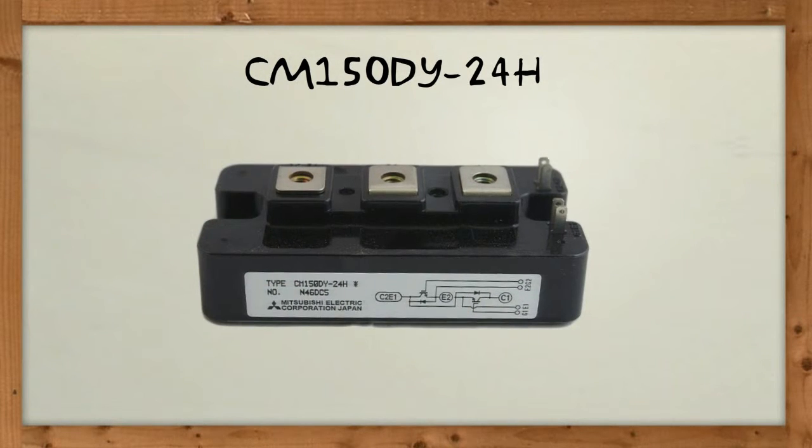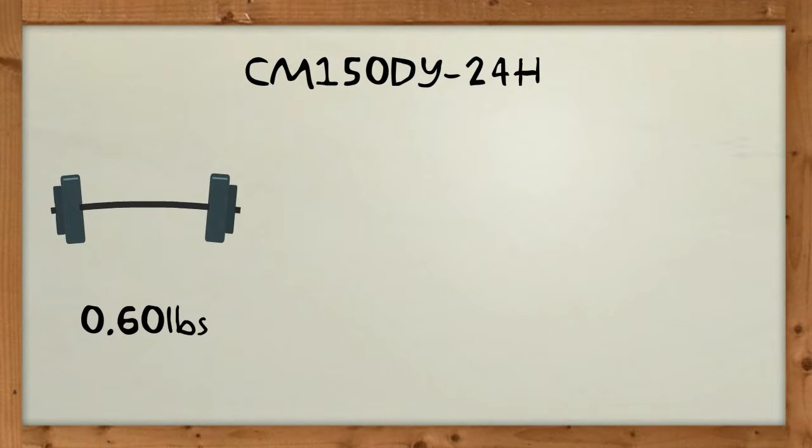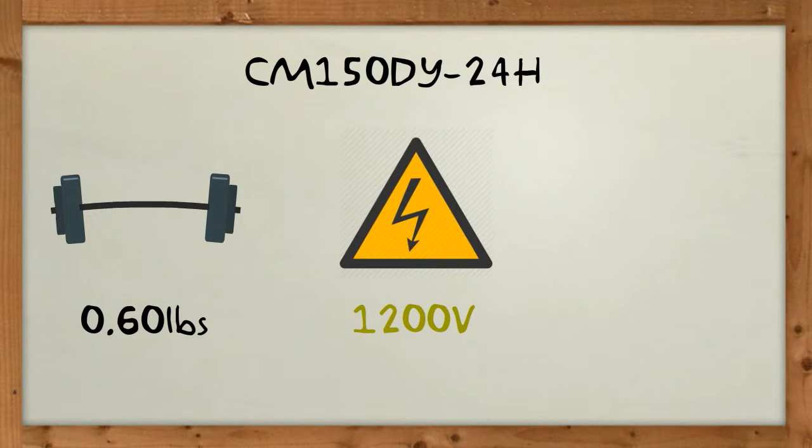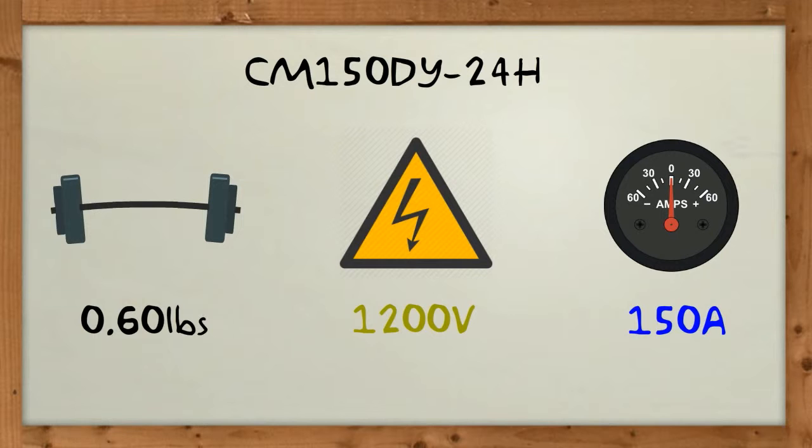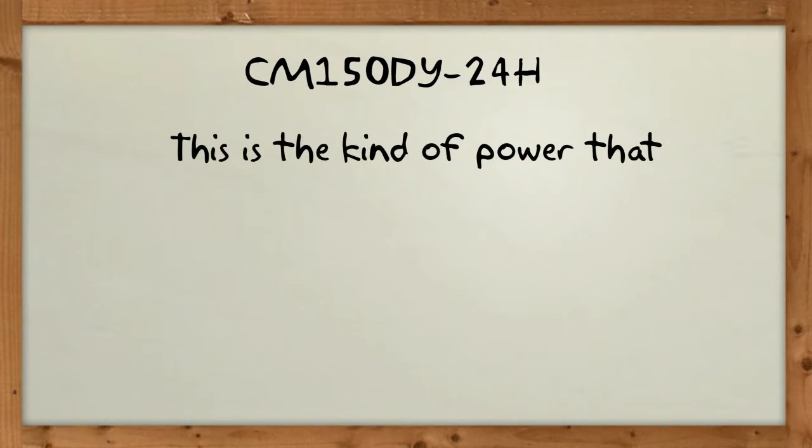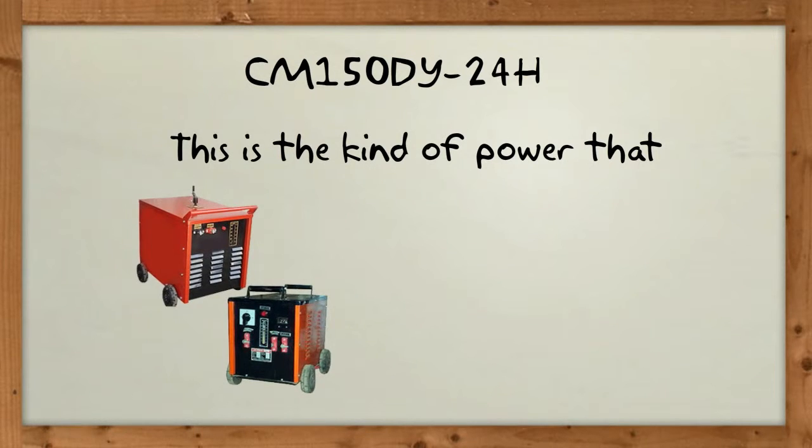CM150DY24H has a super lightweight of 0.6 pounds with the ability to generate 1200 collector emitter voltage and 150 amperes of collector current. This is the kind of power that welding supplies need.